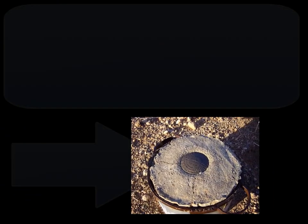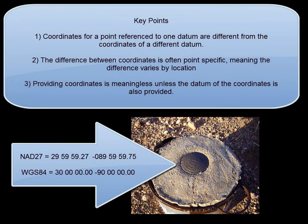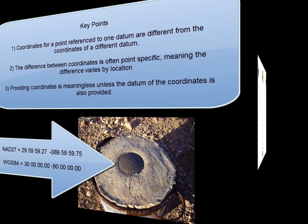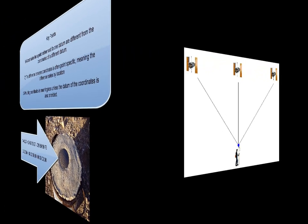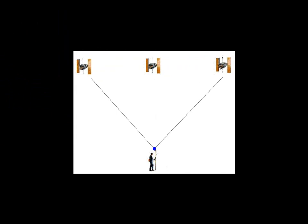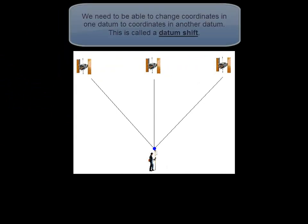Some key points here are that coordinates for a point referenced to one datum are different from the coordinates of a different datum. The difference between coordinates is often point-specific, meaning that the difference varies by location. And finally, providing coordinates is meaningless unless the datum of the coordinates is also provided. You will be typically recording geographic positions referenced to the WGS84 datum.